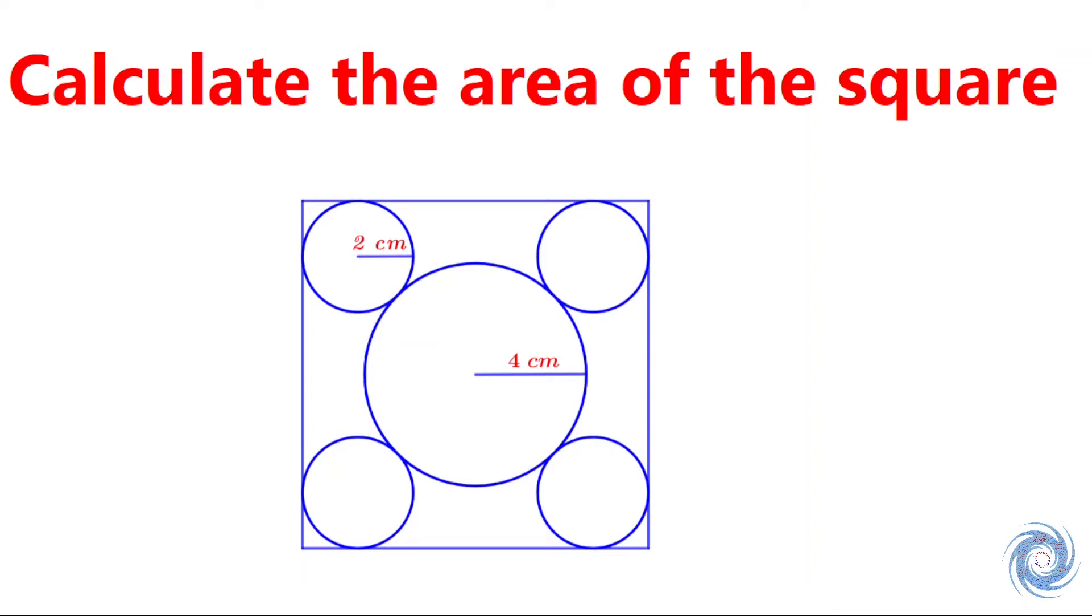Hello everyone, welcome to the family of atomic mathematics. In this video we will solve a problem from geometry. The question is calculate the area of the square. Here we have a figure. The radius of the small circle is 2 cm and the radius of the large circle is 4 cm, and we have to find the area of this square.